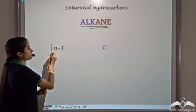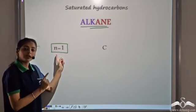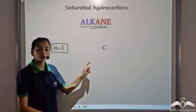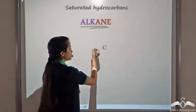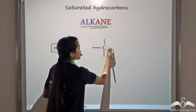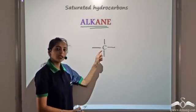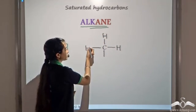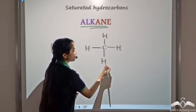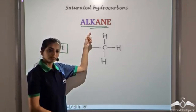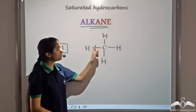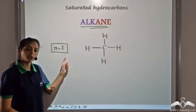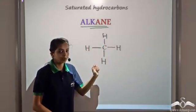Let's take n equal to one, that is when only one carbon atom is present. To satisfy the octet rule, carbon forms four covalent bonds, and since we are talking of hydrocarbons, it is linked to hydrogen. So this is an alkane — a saturated hydrocarbon — containing one carbon atom linked to hydrogen atoms by single bonds.